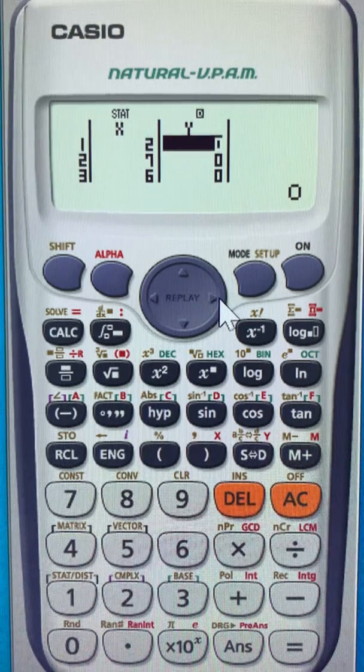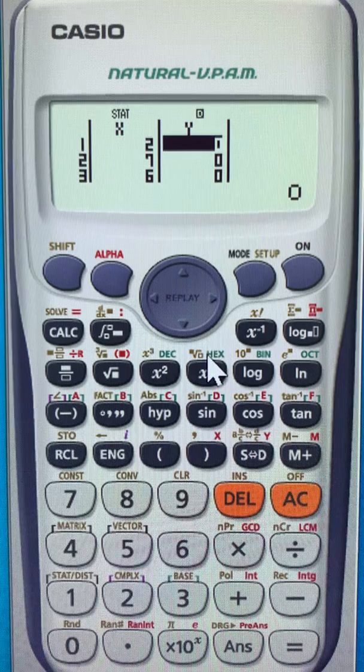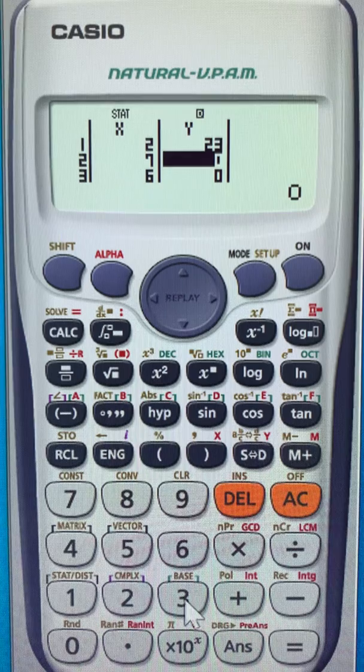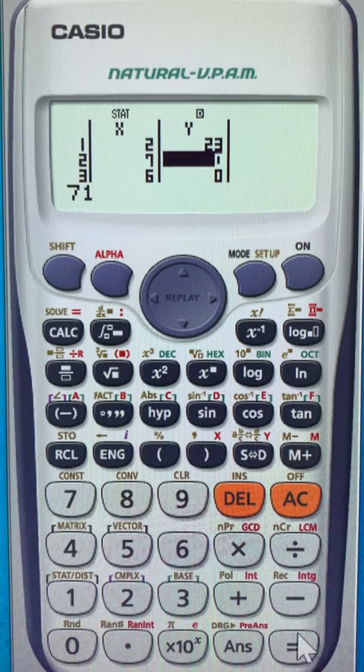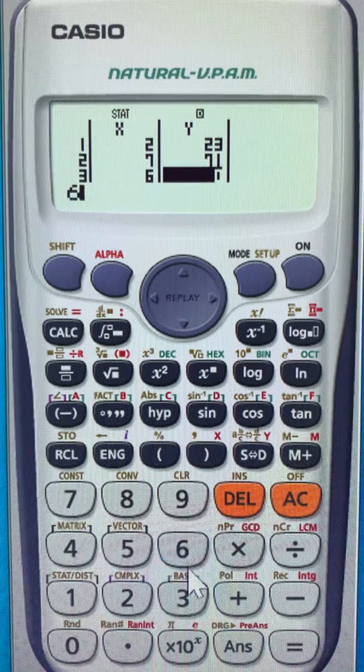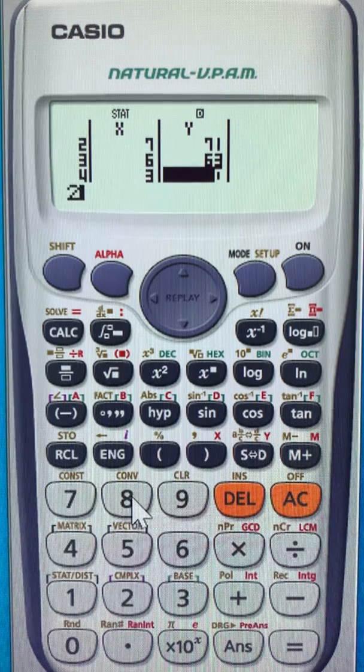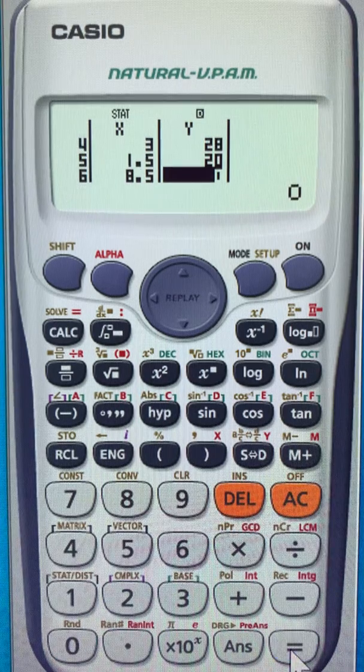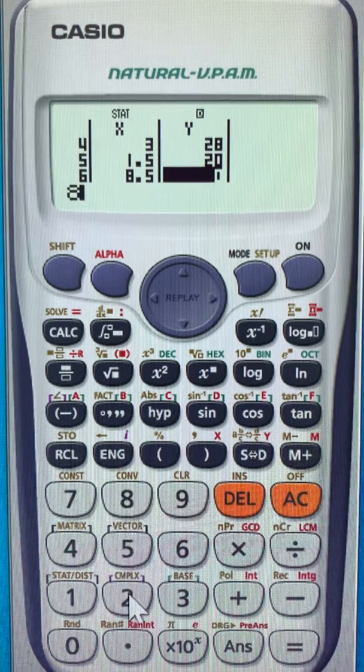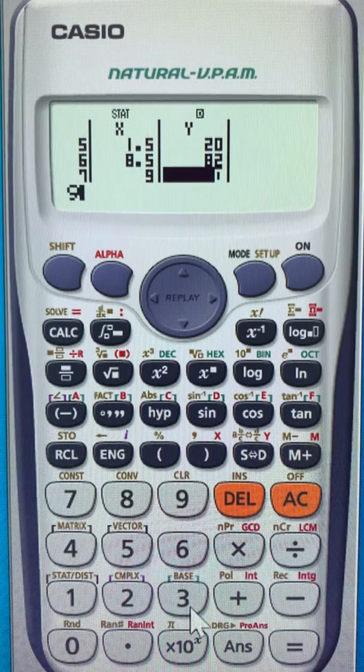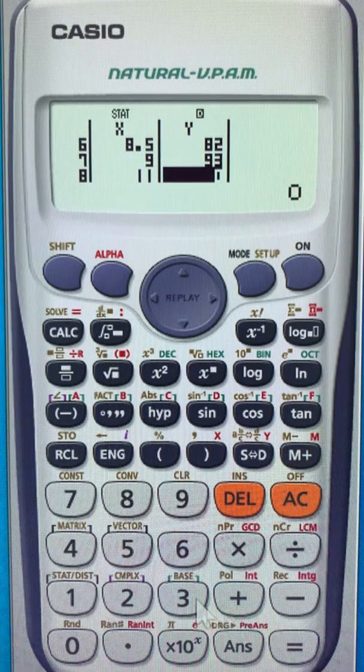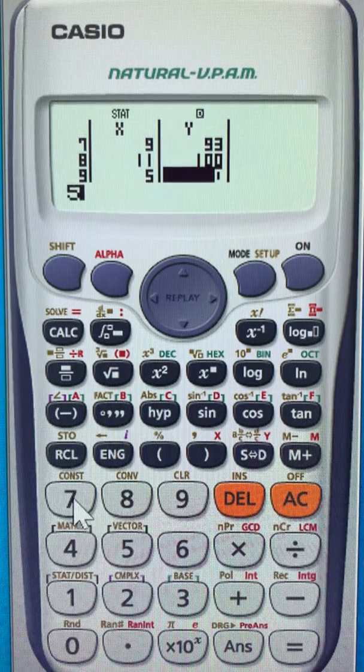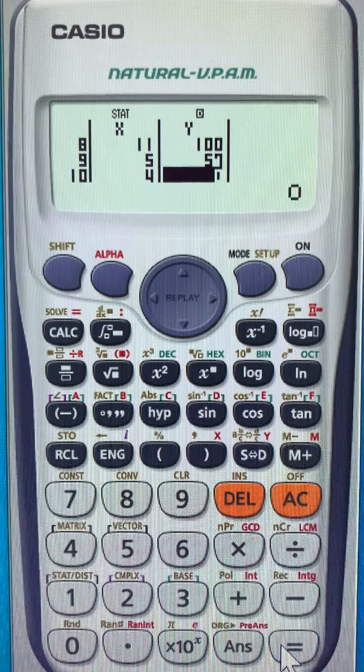Now you start entering the y's. Remember the y's were the grades. So the first one was 23, then you put equal to get to the second one. Then 71, then 63, then 28, then 20, then 82, then 93, then 100, then 57, and finally 42.